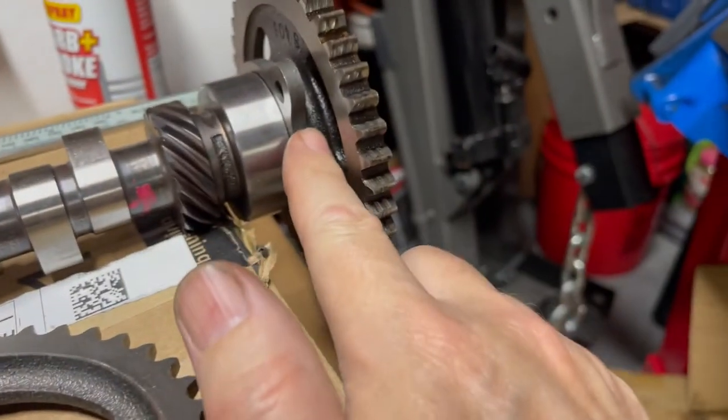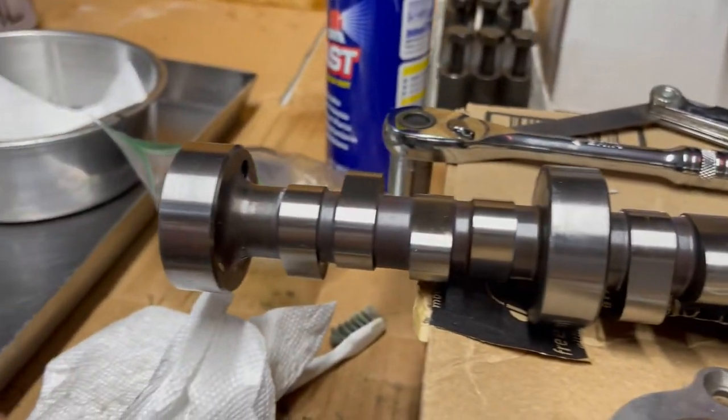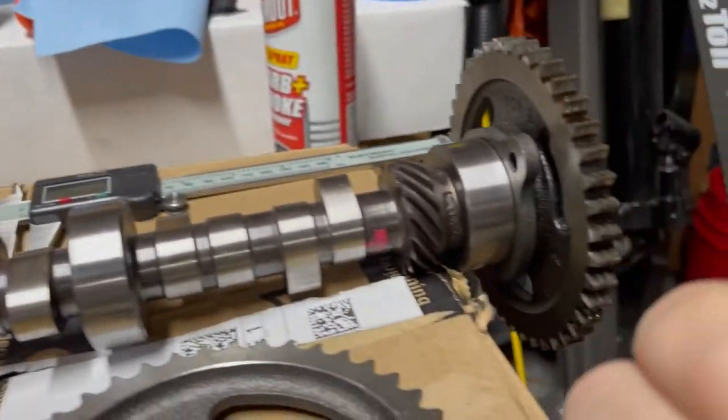So this thrust plate, this is the only thing that keeps the cam from falling out of the engine. It definitely don't want to go back too far because then it'll run into the engine block in the back. And you don't want to come out the front because you'll hit the timing cover.